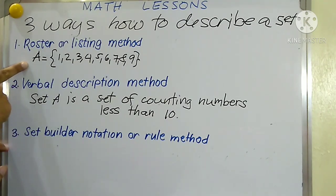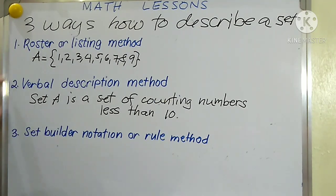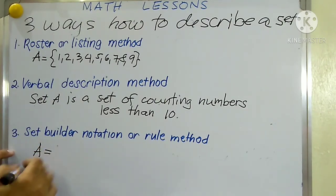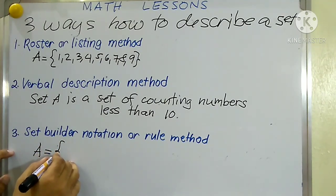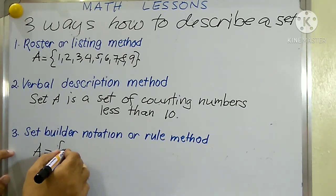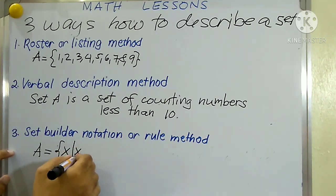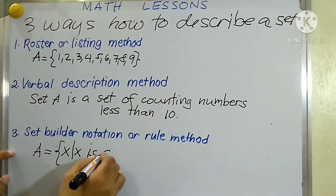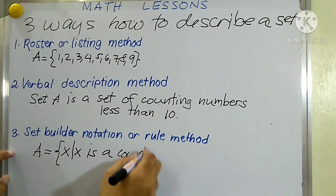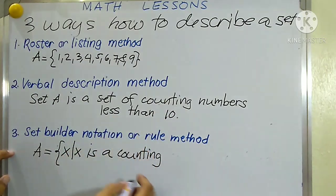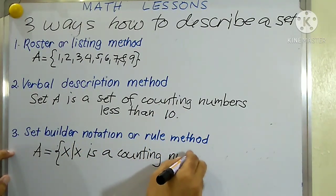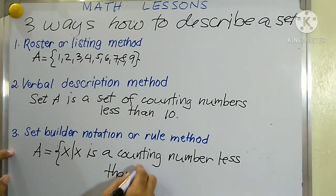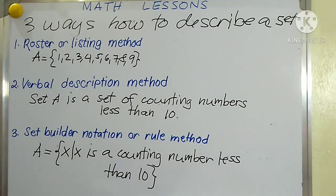So let us refer to our example in the first way. We say set A, we write it set A, and then let's have this brace, then X, then we have this vertical bar, then X again. You write this.